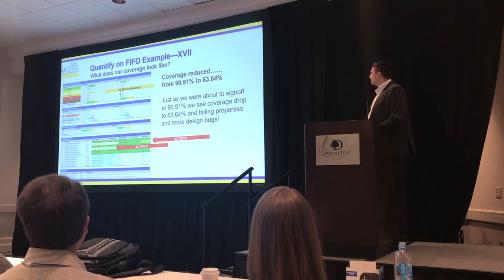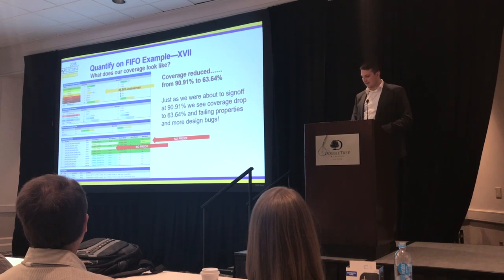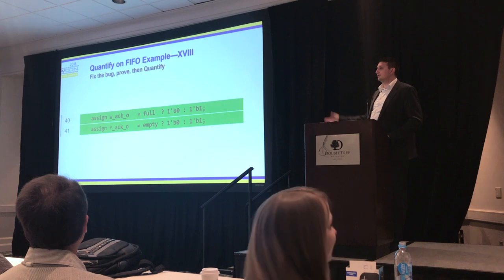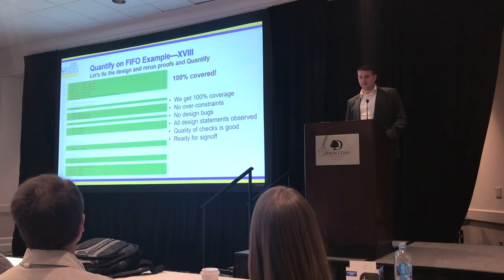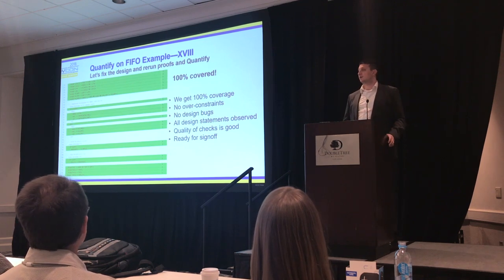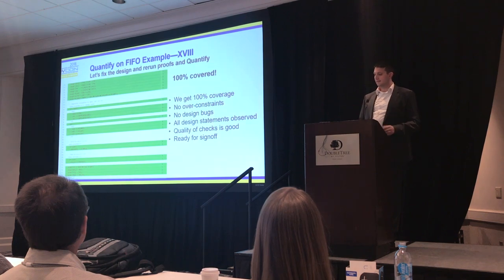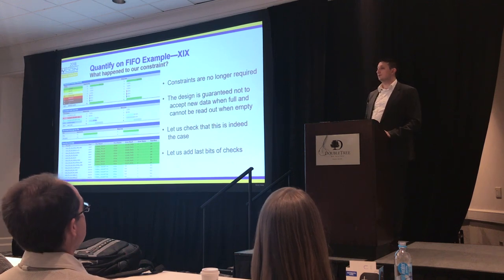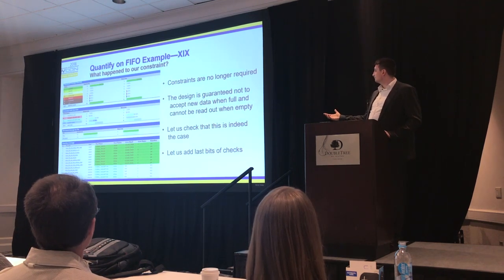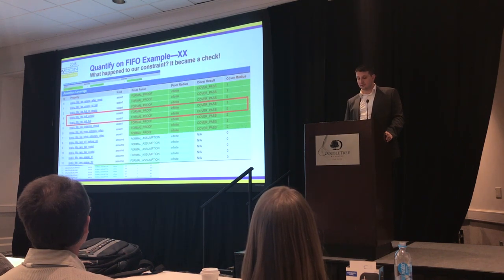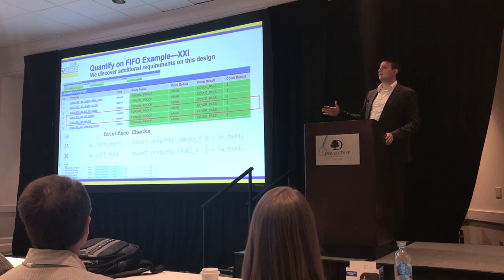So it's not as easy as it seems. We have no proofs for these two assertions — we need to fix them. To do that, we need to model the write and read handshakes properly. Once we fix the bug and quantify again, we now have 100% covered. We don't have design bugs, we have no over-constraints, all design statements are covered. This is now a metric which allows you to say that you are in fact done with verification — now you can be ready to sign off. The constraints are no longer required because the design is designed in such a way that the behavior is enforced by the design itself.